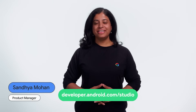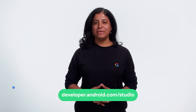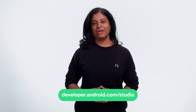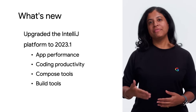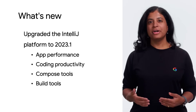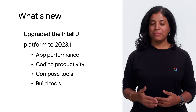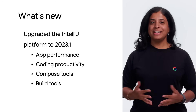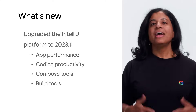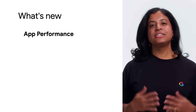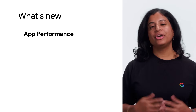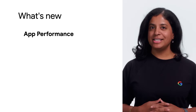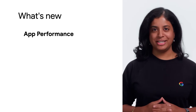Android Studio Hedgehog version 2023.1 is now available for downloading on the Stable channel. In this version, we've updated the IntelliJ platform to 2023.1 and added exciting new features. Improving your app's performance is top of mind for us, and we've added new features to help you get insights into your app's performance metrics.